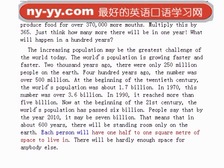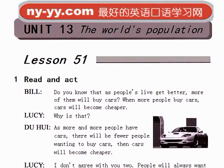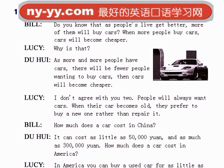Each person will have only one half to one square meter of space to live in. There will be hardly enough space for anybody else. Do you know that as people's lives get better, more of them will buy cars? When more people buy cars, cars will become cheaper. Why is that? As more and more people have cars, there will be fewer people wanting to buy cars, then cars will become cheaper.